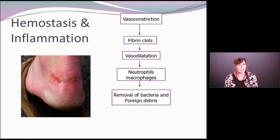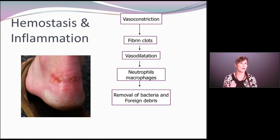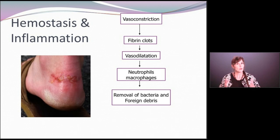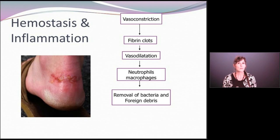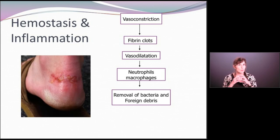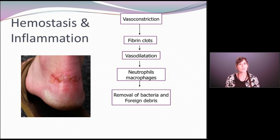Once the bleeding is controlled, we have a process called vasodilatation. Vasoactive substances — things like histamine, bradykinins, and prostaglandins — create vasodilatation of the blood vessels surrounding the tissue injury. The purpose is to bring more blood into that area along with important cellular players: neutrophils and macrophages, specialized white blood cells whose purpose is to engulf bacteria, foreign bodies, and undesirable material in the wound — the janitors or cleanup crew — to get the wound ready to move into the next phase of healing.